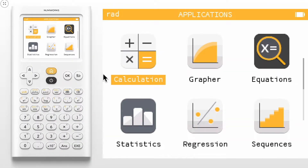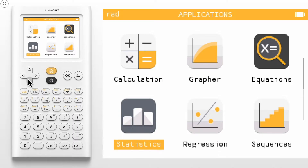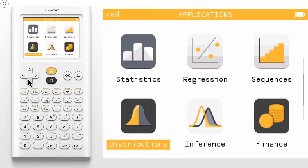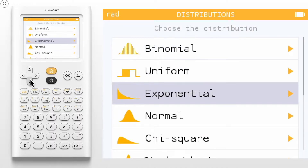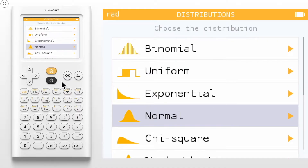Today we are going to learn how to calculate the probabilities and x values given a probability on a normal distribution with the NumWorks graphing calculator. To begin, enter the distributions application. From the list of probability distributions, choose normal.